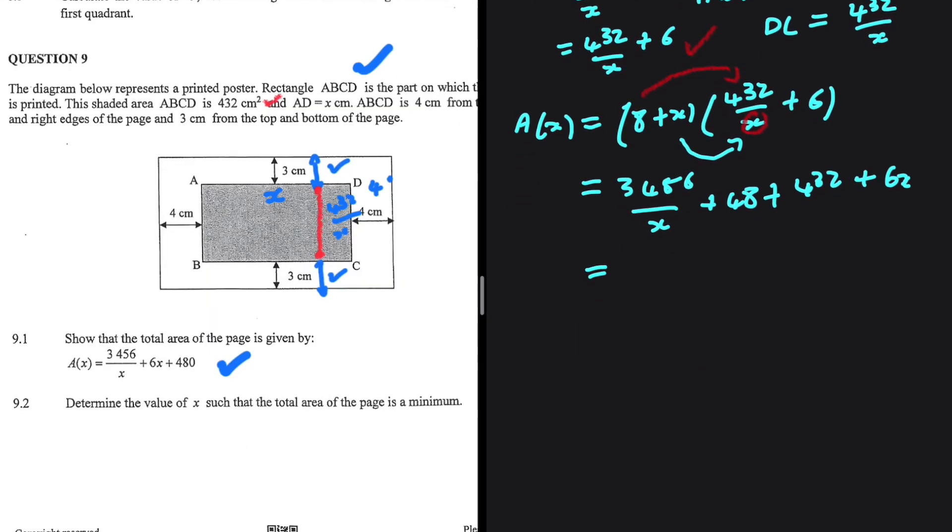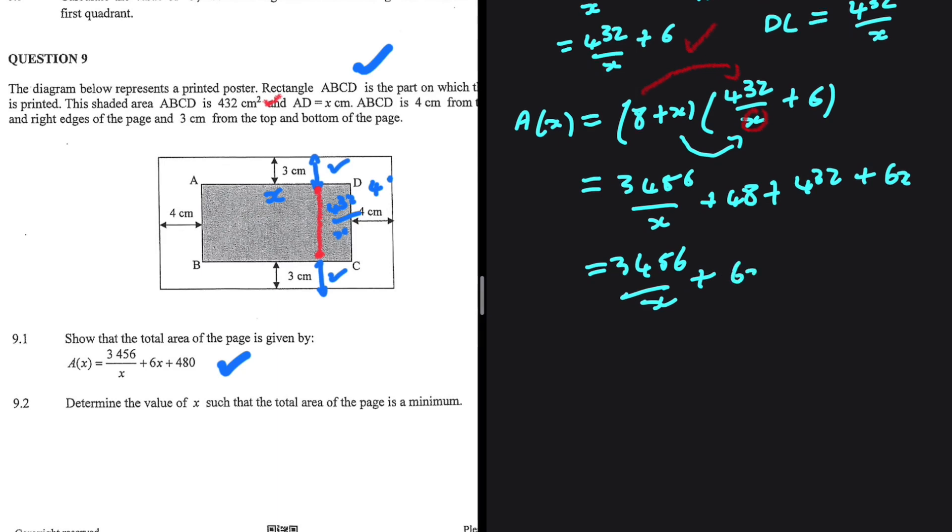This equals 3456/x + 48 + 432 + 6x. 48 plus 432 is 480, so we have A = 3456/x + 6x + 480. This is exactly what we are required to show.